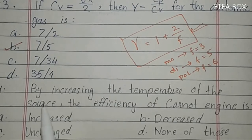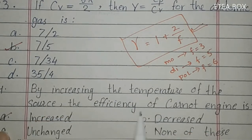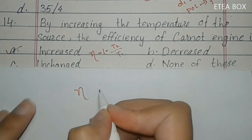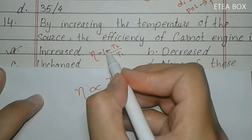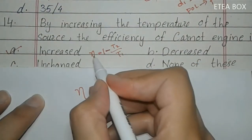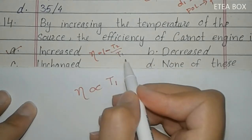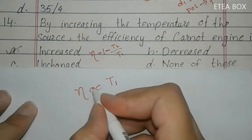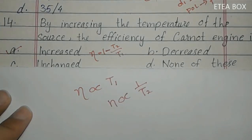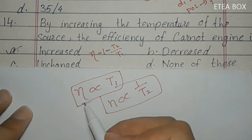Fourteenth MCQ: by increasing the temperature of the source, the efficiency of a Carnot engine increases. Looking at efficiency = 1 − T₂/T₁: efficiency is directly proportional to T₁ (source temperature) and inversely proportional to T₂ (sink temperature), because of the negative sign relationship. So increasing source temperature increases efficiency.